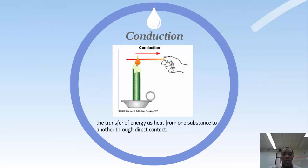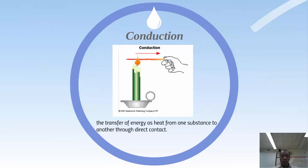Conduction is the transfer of energy as heat from one substance to another through direct contact. Direct contact means it's touching the heat source. Here we have an example of a person holding a rod over an open flame — that is direct contact because the rod is actually touching the flame.